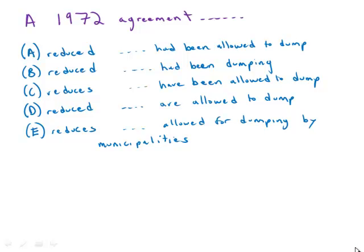This question about dumping phosphates into the Great Lakes begins with a very simple verb tense split: we see 'reduced' or 'reduces.' The subject of the sentence is a 1972 agreement, and since 1972 is in the past, we need the past tense of the verb. 'Reduced' is correct and 'reduces' is incorrect, so C and E are out right away.